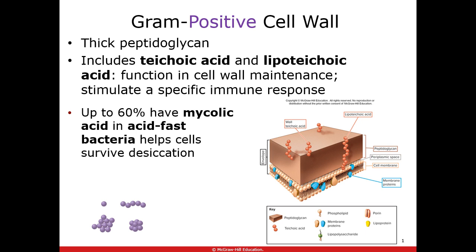About half of all gram positive bacteria have another structure inside the cell wall called mycolic acid. Despite the name, it's not an acid — it's a lipid. It acts like a waxy lipid coating on the wall, and one of its functions is helping the bacteria survive desiccation, or drying out. Bacteria need water just like we do, so this coating helps them not dry out as fast.